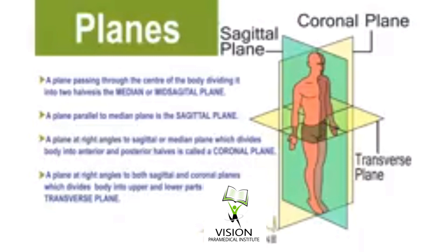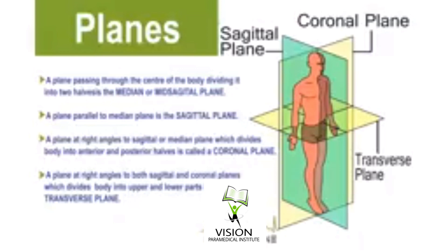Our body is divided into different planes. The first plane is the median plane, or mid-sagittal plane. A plane passing through the center of the body, dividing it into two equal halves — right half and left half — is called the median plane or mid-sagittal plane. The second one is the sagittal plane: a plane parallel to the median or mid-sagittal plane.